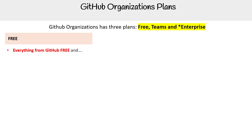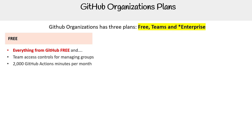With the Free plan, you get everything that was in GitHub Free, with the addition of team access controls for managing groups, 2000 GitHub Actions minutes per month, and 500 megabytes of GitHub Packages storage. It's not entirely clear whether those last two apply to the org or to the personal account that has the org, but they're included.